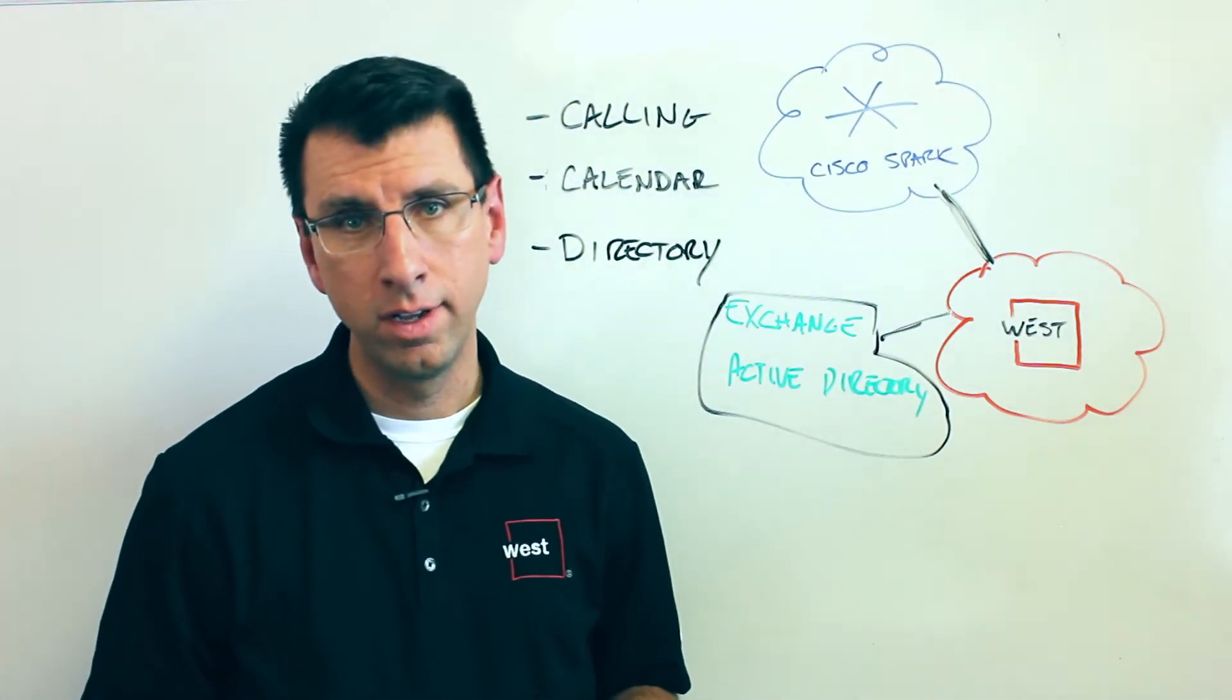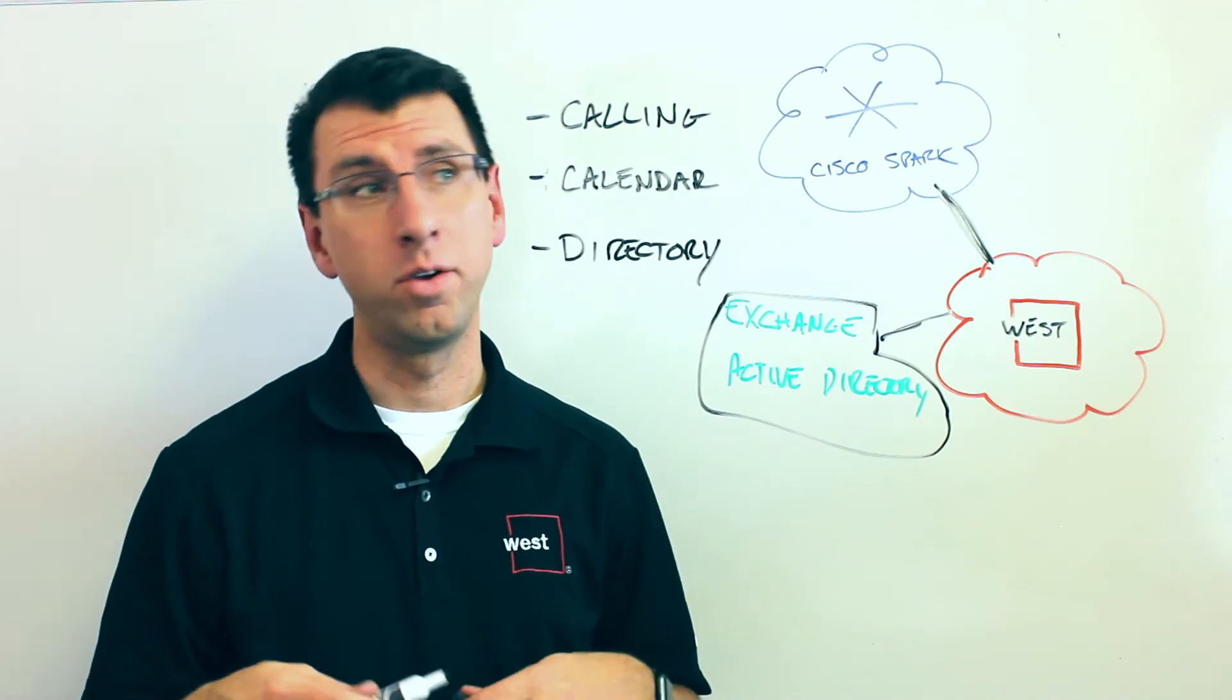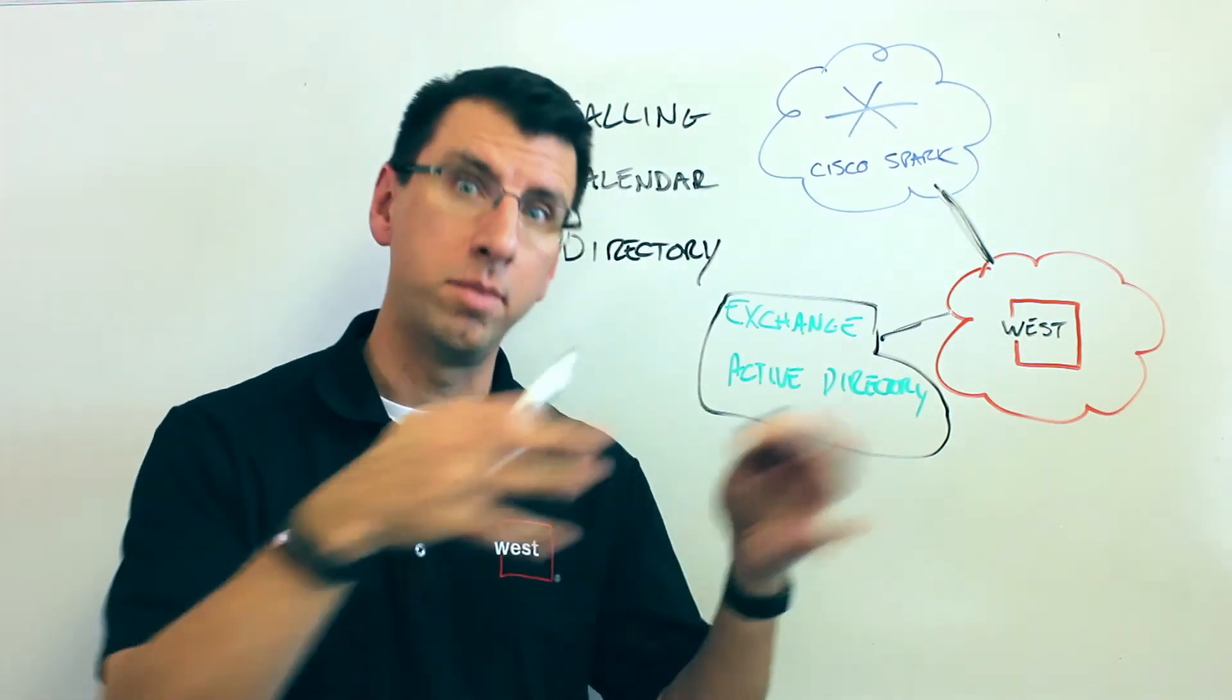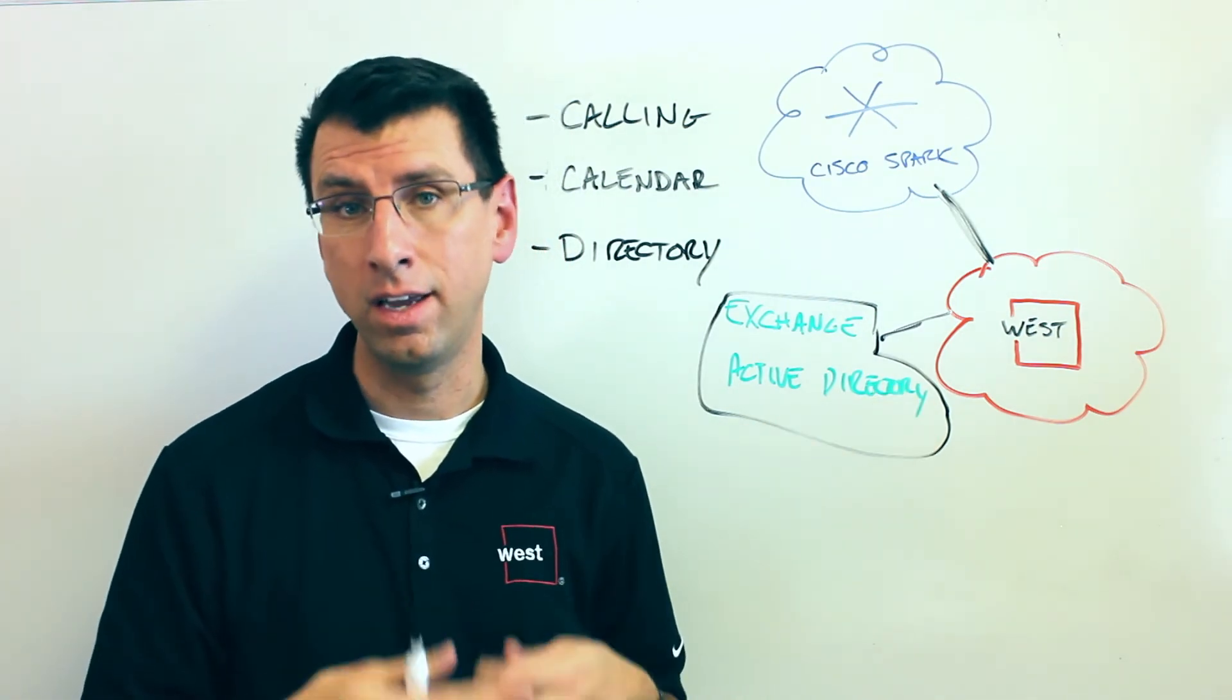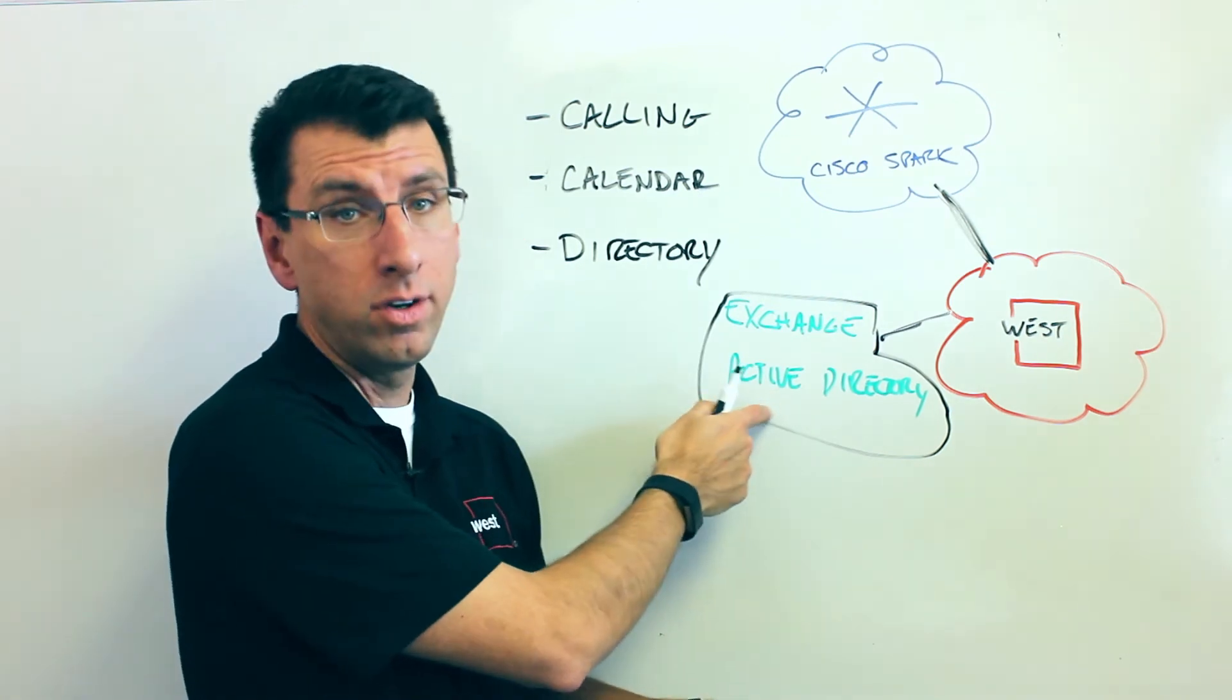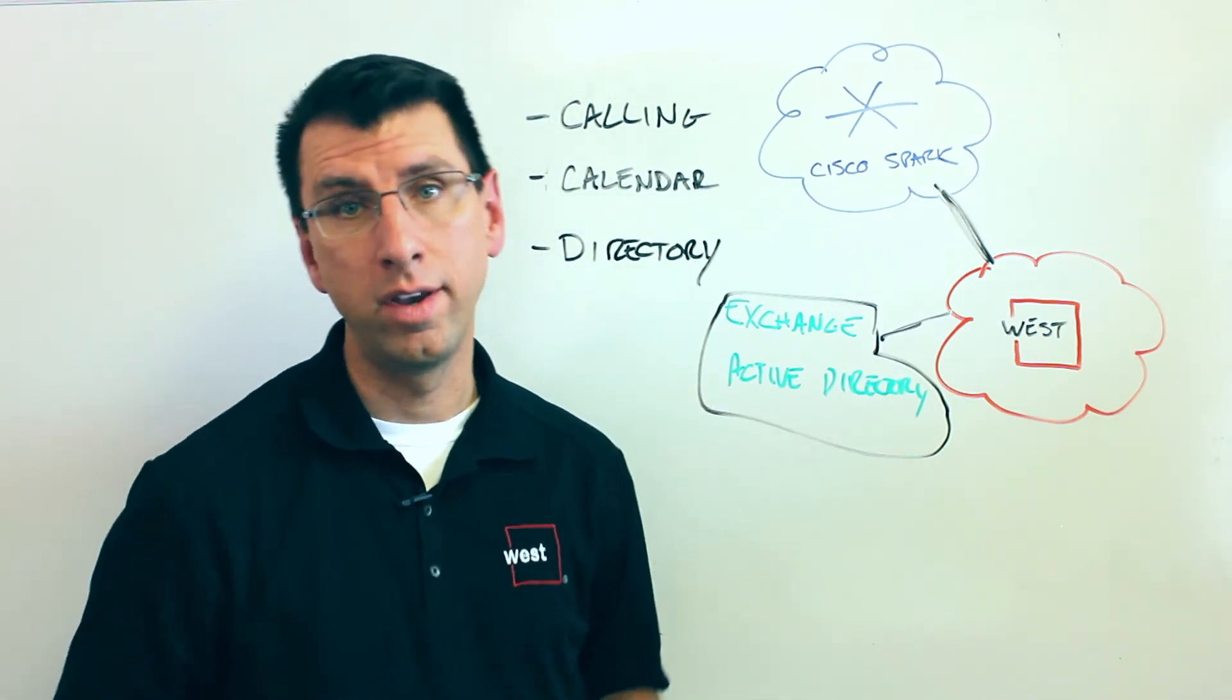And the last one is directory integration. This is useful for the fact that you don't necessarily want to take all of your users that are in your Active Directory system, export them and upload them to Spark. You want those two things to stay in sync and you may even want to turn on single sign-on. That means using the directory credentials that are in AD as your way of signing into Spark.